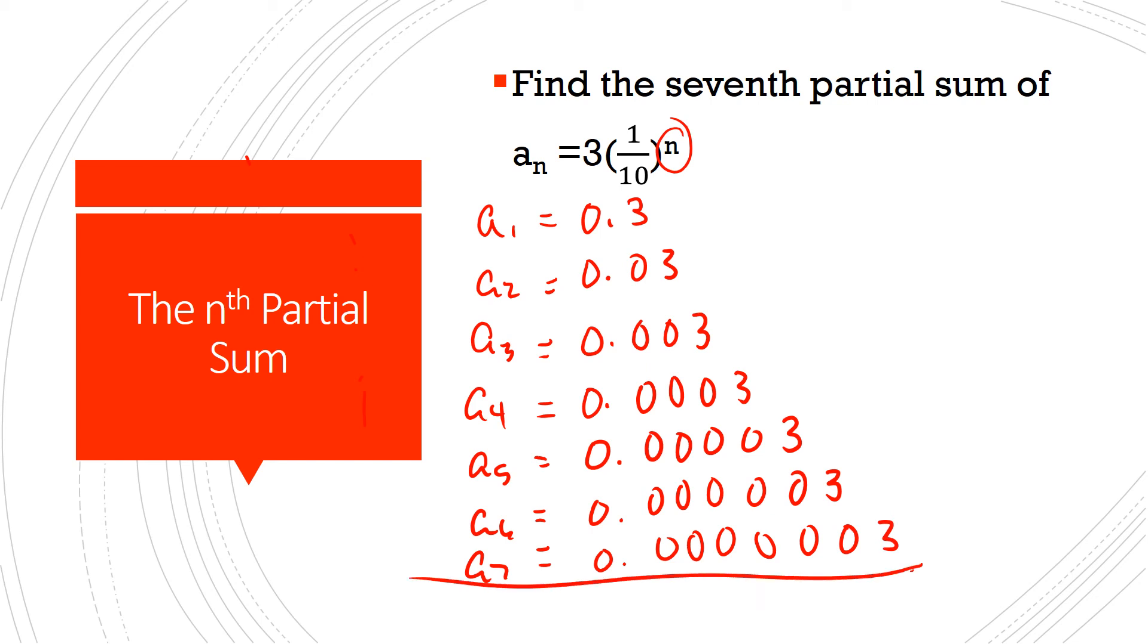And then if I add all that up together, what am I going to get? I'm going to get 0.3333333. I think I've got to have one more digit. 1, 2, 3, 4, 5, 6, yep, I've got to have one more.